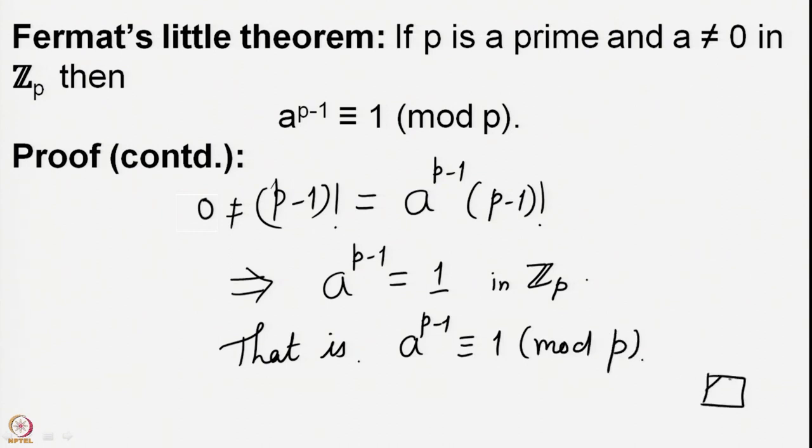This beautiful fact is useful for primality testing: take a number n, pick some element from 1 to n-1, raise it to the power n-1, and if the result is not congruent to 1 mod n, then n cannot be prime. However, there are some naughty composite numbers n that satisfy Fermat's Little Theorem for all bases — we will mention them in the next lecture but they are not a main part of our course.